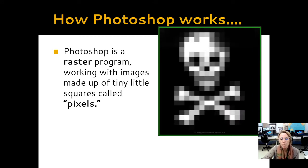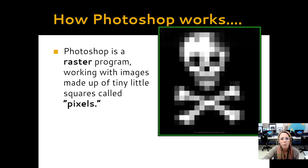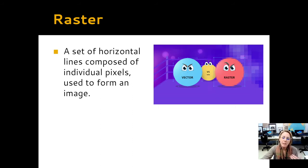The way that Photoshop works is it works as a raster program. Raster means the way it creates the files is through tiny little pixels — little tiny squares. Those squares are called pixels. The more pixels you have in an image, the better the quality. The fewer you have, the poorer the quality. We've all downloaded images from the internet that look great on the screen, and then we go to use them and all of a sudden they pixelate and look terrible. It's because of the raster format of the file and the resolution that it has.